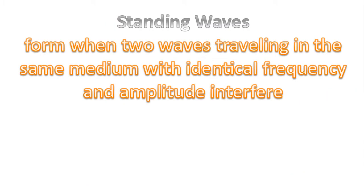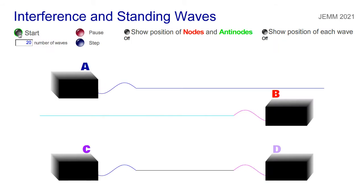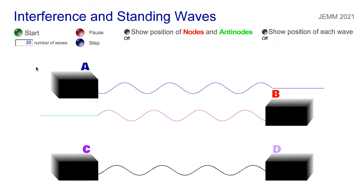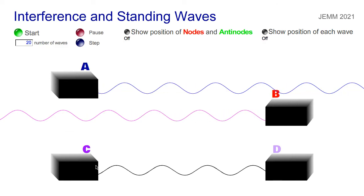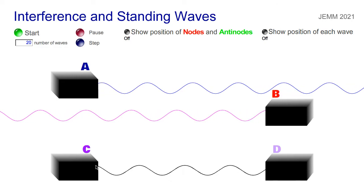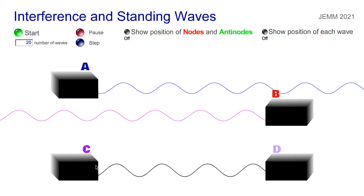The second part of our discussion will focus on standing waves. They form when two waves traveling in the same medium with identical frequency and amplitude interfere. Today our medium will be the string. Let's see the simulation. Focusing our attention on wave C and wave D, we get the pattern here. This is called a standing wave.